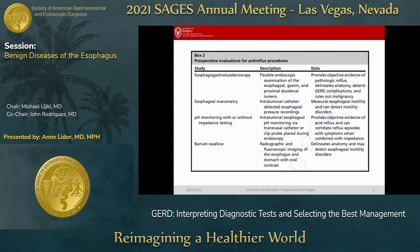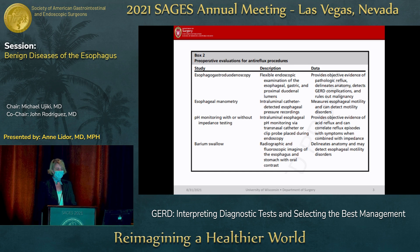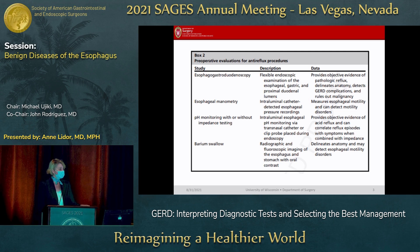There are a variety of studies used commonly to work up patients with reflux. I think these four studies are the most commonly used: EGD, manometry, a pH study, and a barium swallow. But that's not really practical for every patient. Most people taking care of patients with reflux will selectively use some of these studies. We have a protocol at the University of Wisconsin where we start by screening everyone with an EGD and a barium swallow and go from there.